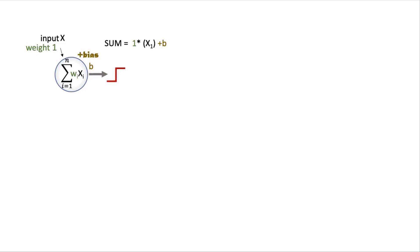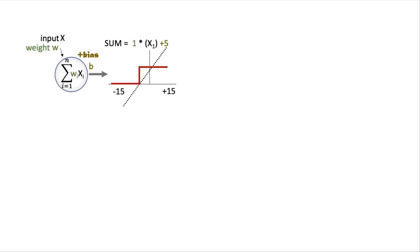If the bias term is 5, then the sum is 1 times the input x plus 5, and that means for all input values that are less than negative 5, the value of the sum will be less than zero. So when the sum is fed through the step activation function, this neuron is going to output a zero. For all values of the input x that are greater than or equal to negative 5, the sum will be greater than or equal to zero, and feeding this through the step activation function means that the neuron will output a one. We can shift the value of the input where the model transitions from outputting a zero to one by changing the value of the bias and keeping the weight fixed at one.